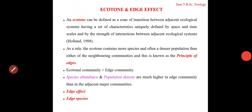Ecotone is defined as a zone of transition between two adjacent ecological systems, having a set of characteristics uniquely defined by space and time scales and by the strength of interactions between adjacent ecological systems. This definition was put forward by Holland in 1988. To simplify: ecotone is a transition zone where two or more different communities meet, merge, and overlap.